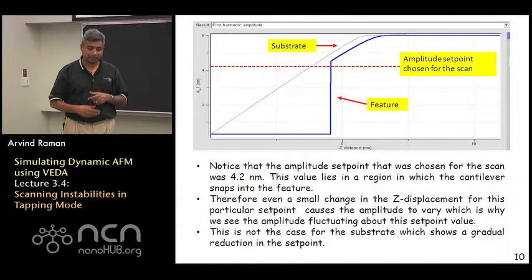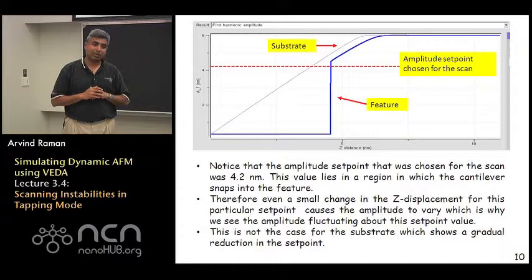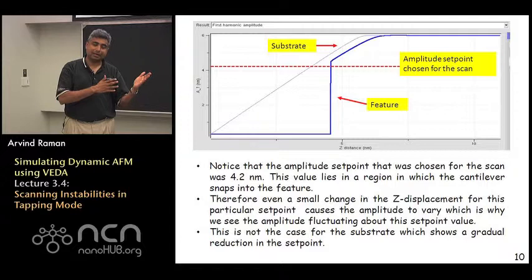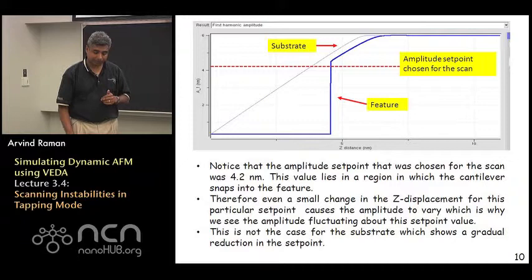So what one could hope to do therefore based on this analysis is that if one chose a set point ratio that lay at a large enough value where you would get stable oscillations both on the feature and on the sample, you might be able to actually image the sample. But do keep in mind that even so the substrate always has a repulsive regime oscillation in this particular simulation whereas the feature is going to have an attractive regime oscillation if you try to image it at larger set points.